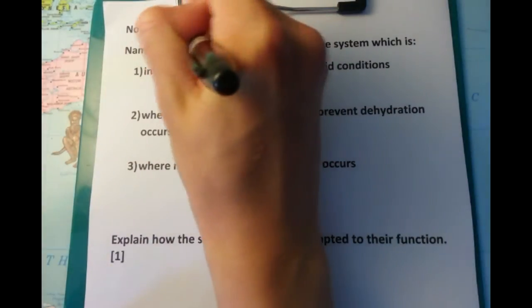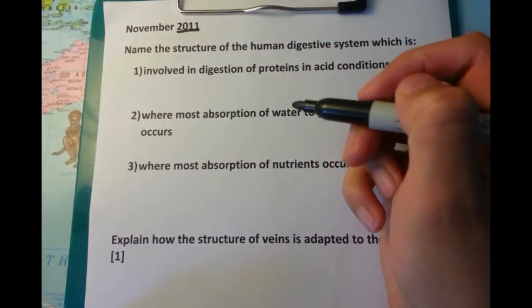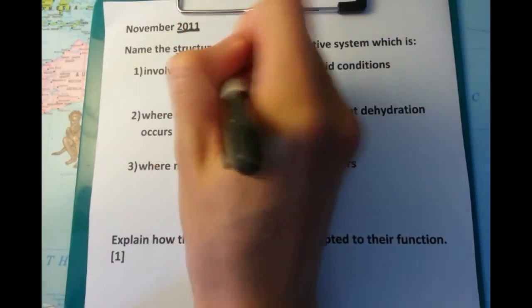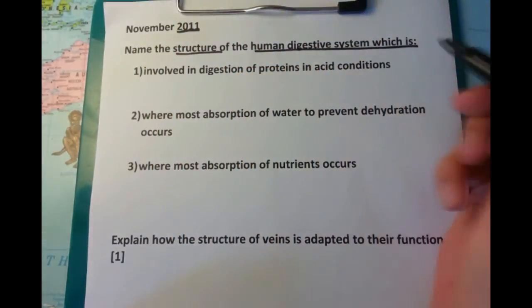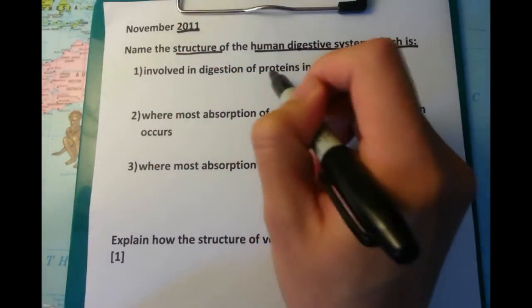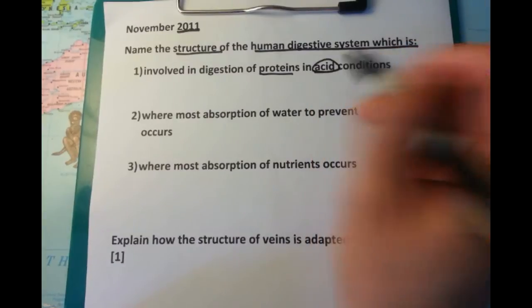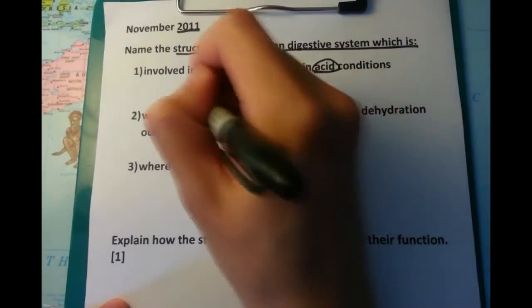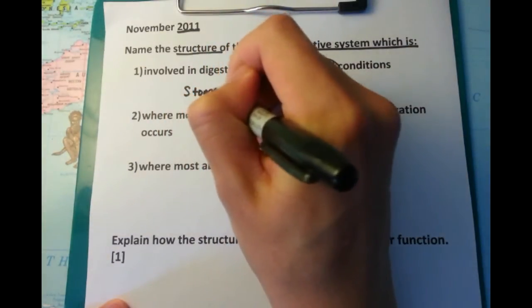Name the structure of the human digestive system. We have one, two, and three different parts of this question, so this total — some of these questions will be worth three points. The first one is: